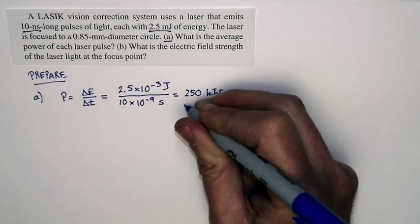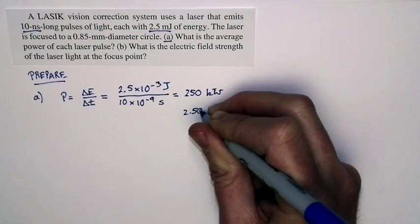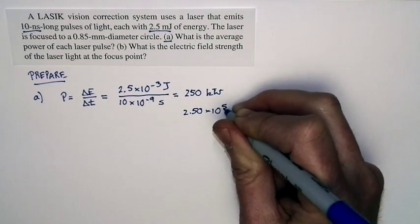And so we end up with a power of 250 kilowatts, or 2.50 times 10 to the fifth watts.